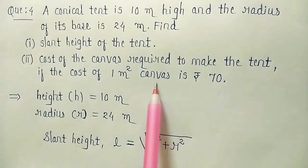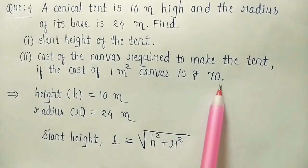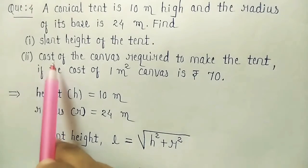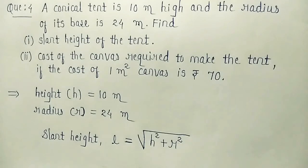For 1 meter square canvas the cost is Rs 70. So according to the area how much it is. So to find the cost first we need curved surface area. So let us find it.